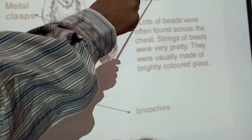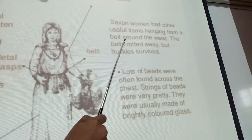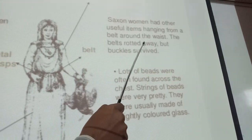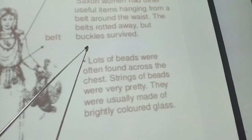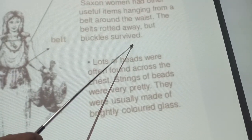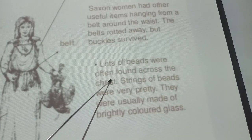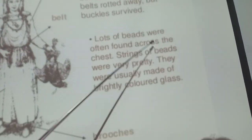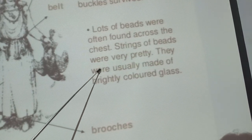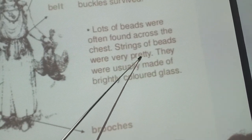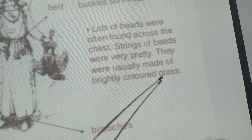Saxon women had other useful items hanging from a belt around the waist. The belt would rot away but buckles survived. Lots of beads were often found across the chest. Strings of beads were very pretty and were usually made of brightly coloured glass.